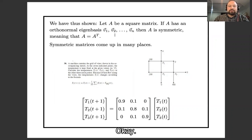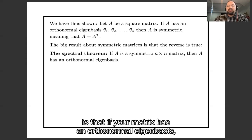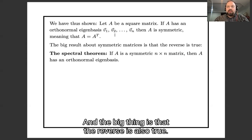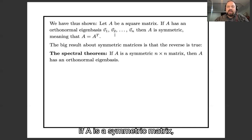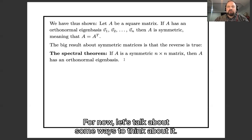So what we've said so far is that if your matrix has an orthonormal eigenbasis, then your matrix is symmetric. The big theorem is that the reverse is also true: if A is a symmetric matrix, then it has an orthonormal eigenbasis. We'll prove that later. For now, let's talk about some ways to think about it.